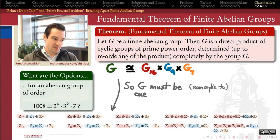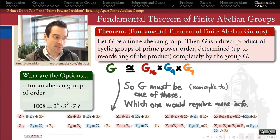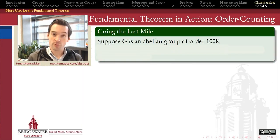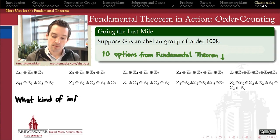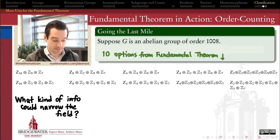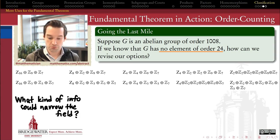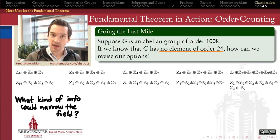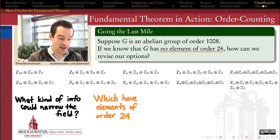What the theorem doesn't do is tell us exactly which one of these 10 our group is going to be. For that, I would need some more information. If I know something more about my group, then I should be able to narrow down the possibilities. For example, suppose I know that G does not have an element of order 24 in it — is there a way we can then revise our options? Which of these 10 things might it be, and which will it definitely not be, based on this new information that G doesn't have elements of order 24?